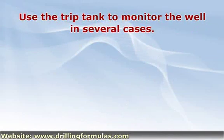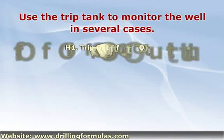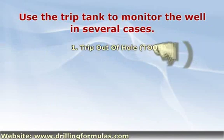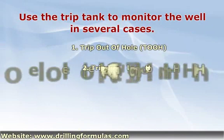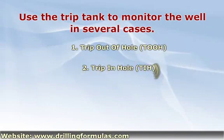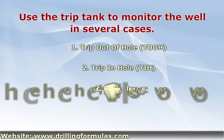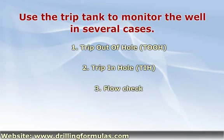First: Trip out of hole. While tripping out of hole, the TripTank is used to track the volume of mud replacing the volume of the drill string. The volume of mud should be equal to the displacement volume of any tubular tripped out of hole.